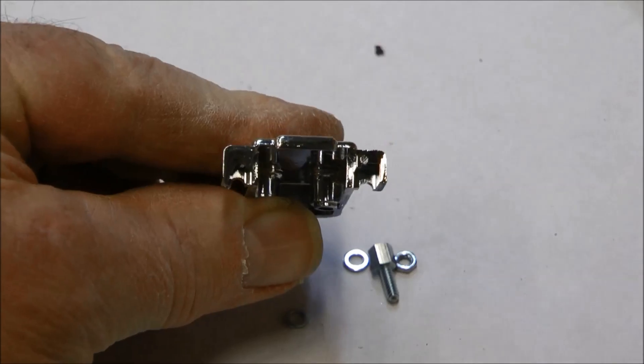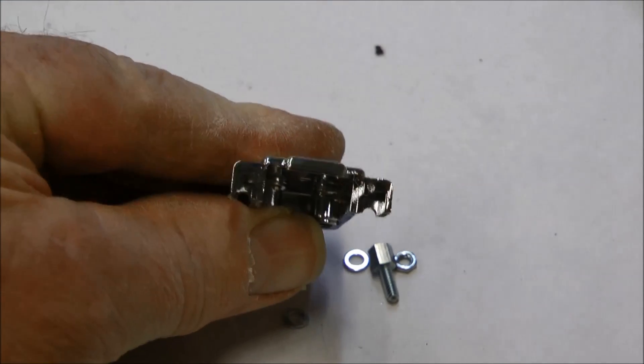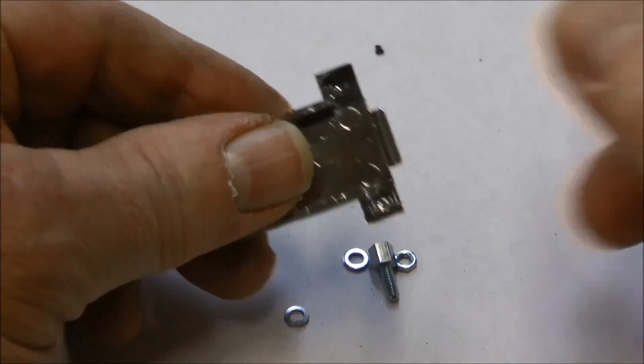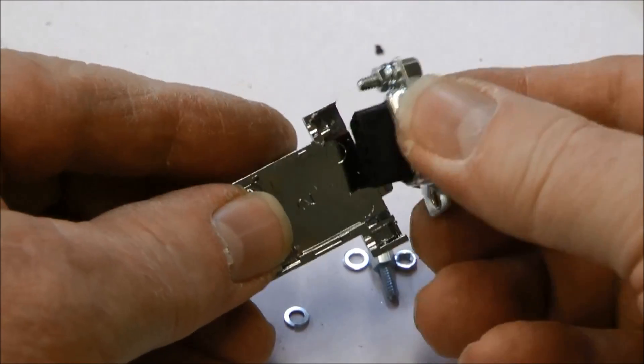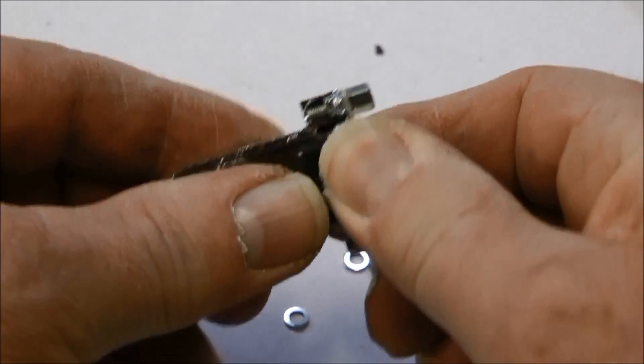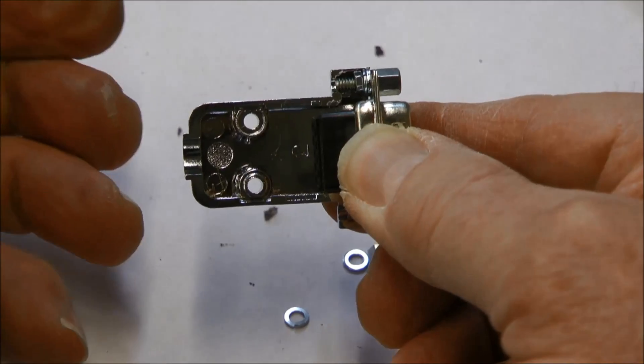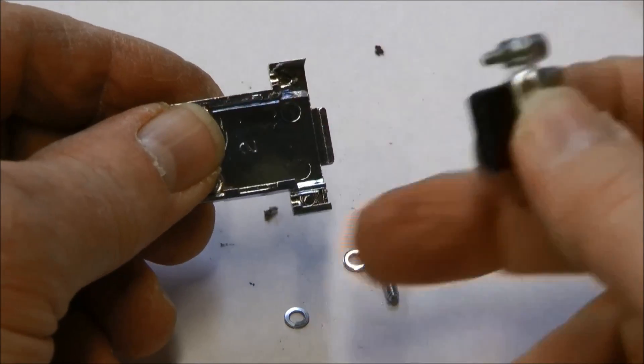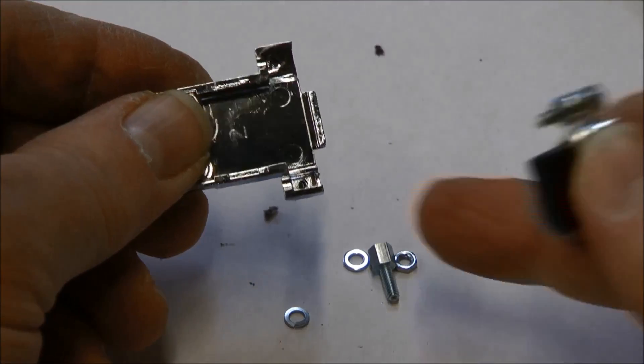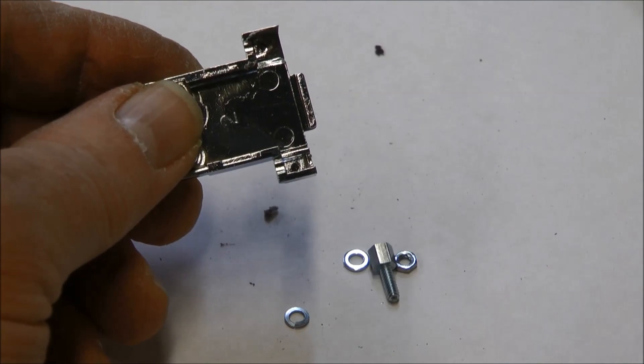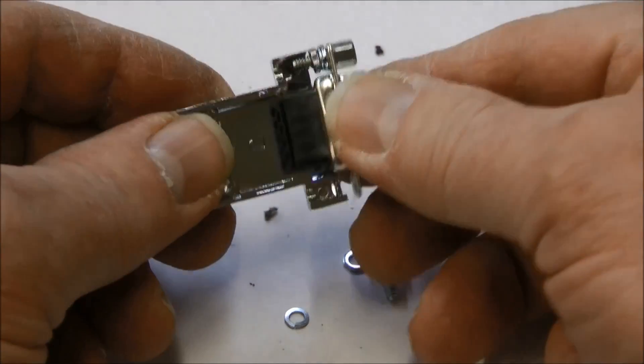And you can see what we've done here is just kind of thin that out. Then you can see how that will fit in there pretty nicely, and you'll need to do that for both sides and all four of the mating corners here.